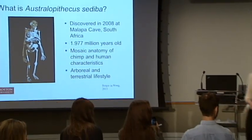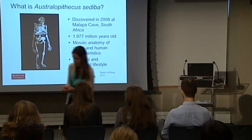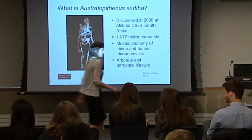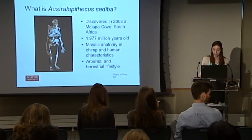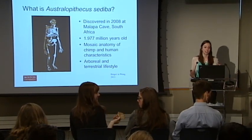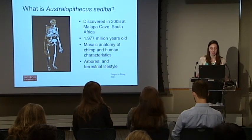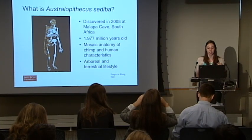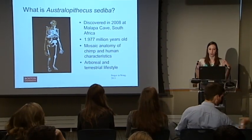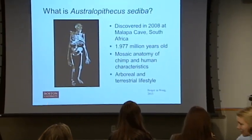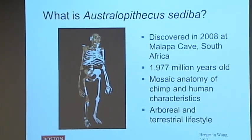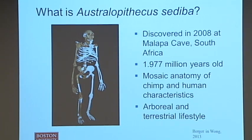I brought her hand, part of her pelvis, and part of her heel and ankle for you to pass around. One of the things that's really interesting about the anatomy of sediba is that she has a mosaic of both chimp and human-like characteristics. For example, she has the shoulder of pretty much an orangutan, but she also has the pelvis of a modern human, suggesting she was living in both an arboreal and a terrestrial environment — a dual lifestyle.